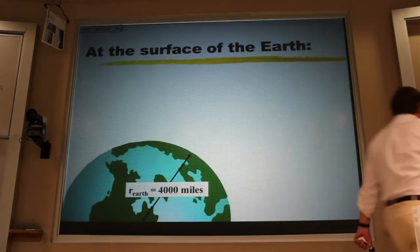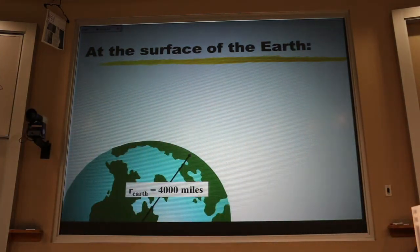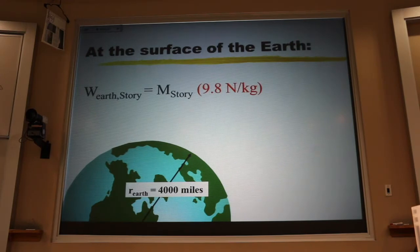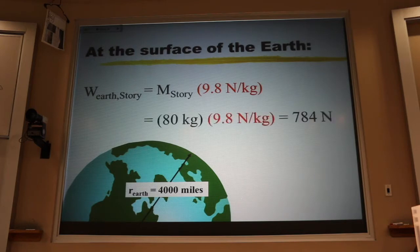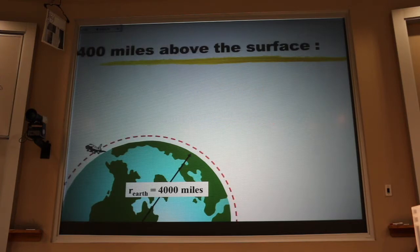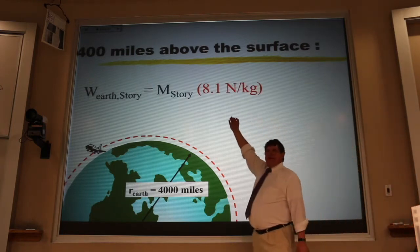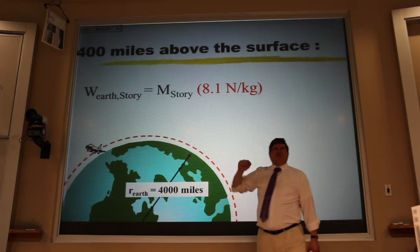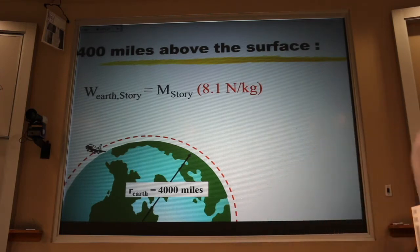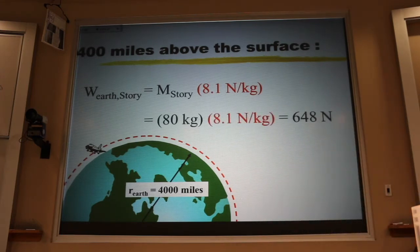Now, if we look at Story Musgrave standing on a scale in his bathroom at home, the Earth's gravitational field there is 9.8 newtons for each kilogram. That gives him a weight force, a true weight, of 784 newtons. Now, if we look at him in the space shuttle, just a little bit higher, a little bit further from the center of the Earth, the gravitational field is weaker out there. But not that much weaker. It's 8.1 instead of 9.8. And that's where I got the weight force of 648 newtons.